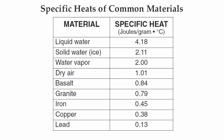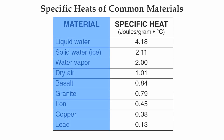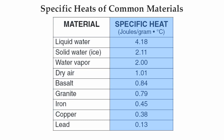Specific heat is an interesting concept because it's basically how quickly or how slowly something heats up or cools off. You'll notice that you have a number of materials on the left-hand side, from liquid water down to lead, and on the right-hand side is the actual specific heat. The specific heat has a unit called joules, which is just the amount of heat energy required to raise one gram of a substance one degree Celsius.